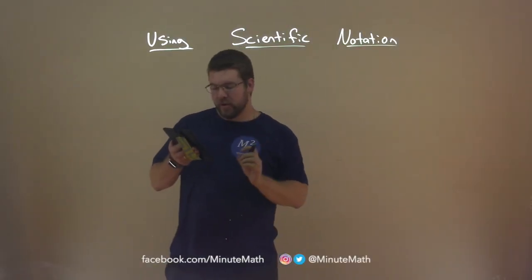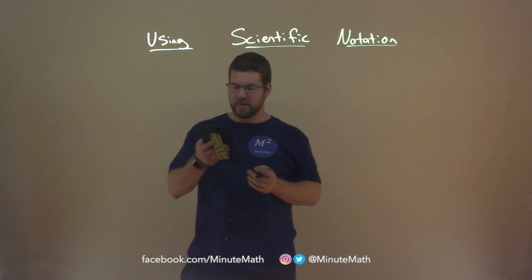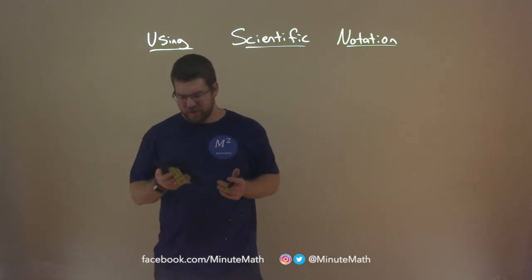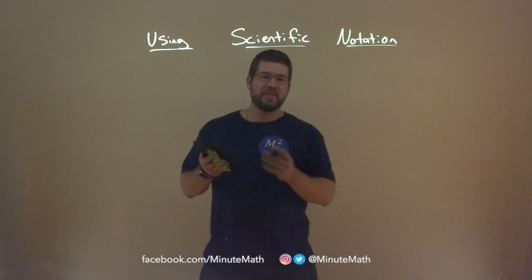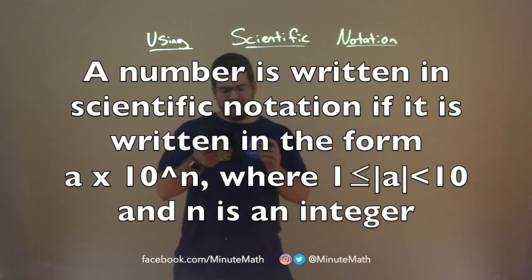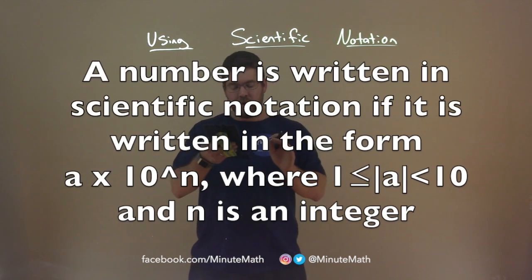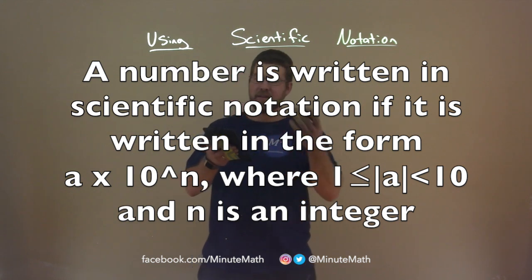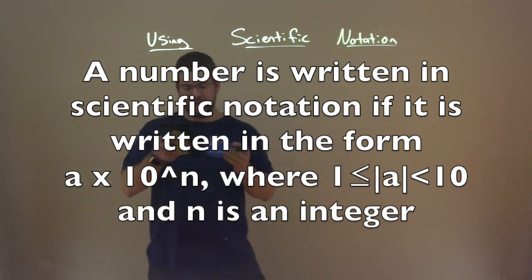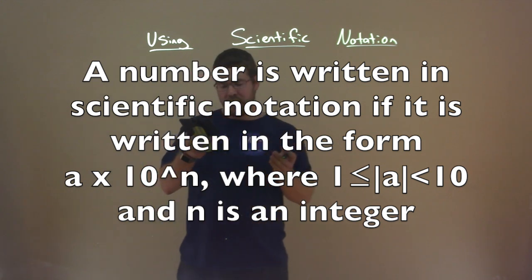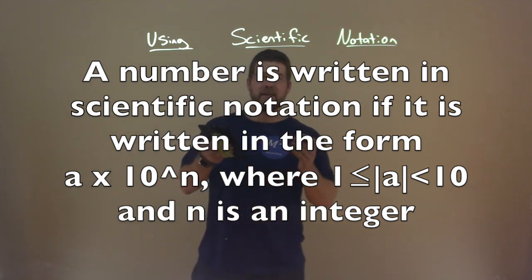First, we're going to convert standard notation to scientific notation. The definition is this: a number is written in scientific notation if it is written in the form of a times 10 to the n power, where 1 is less than or equal to the absolute value of a, which is less than 10, and n is an integer.